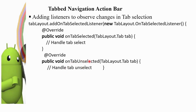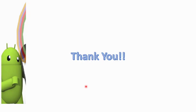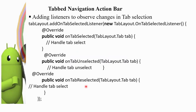We use TabLayout.addOnTabSelectedListener and implement these three built-in functions: onTabSelected, onTabUnselected, and onTabReselected. These are the functions of the listener.